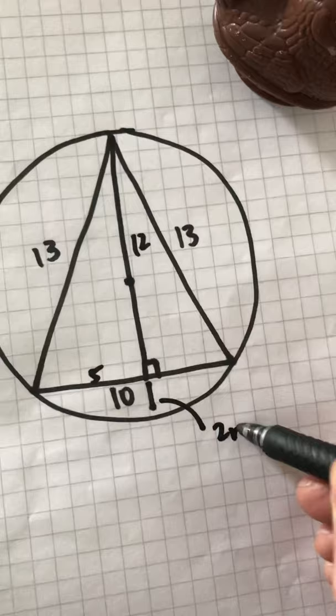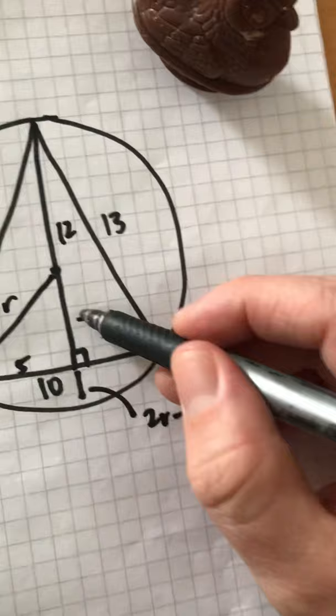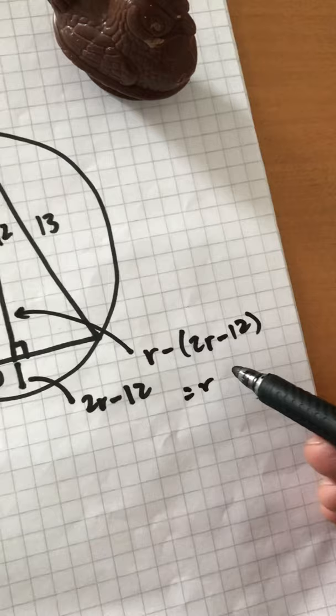This little length is going to be 2R minus 12. Then we can find the radius using Pythagoras again. This length is going to be R minus 2R minus 12, which is negative R plus 12.